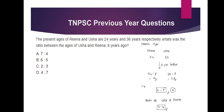That's the answer. Now, if you have 4 to 7 and 7 to 4, you might find a mistake. The ages of Rina and Usha are 24 and 36, and you need to find the ratio of Usha to Rina. The answer is 7 is to 4. Option A is the answer.